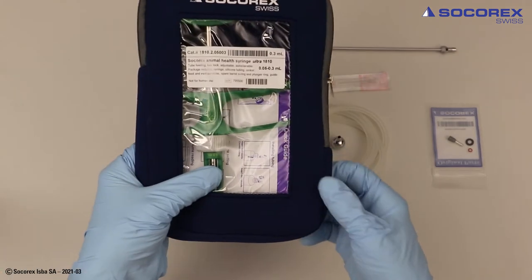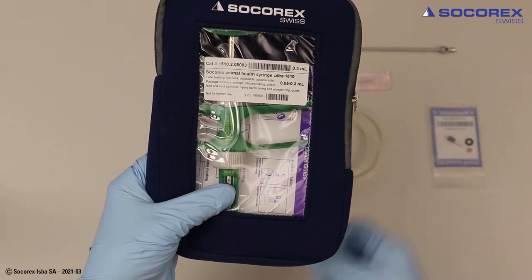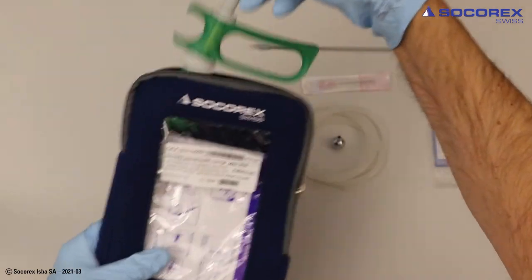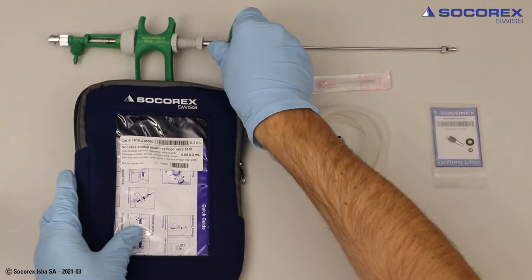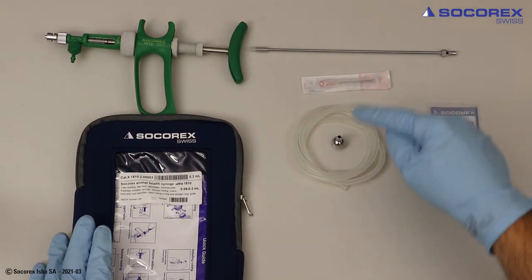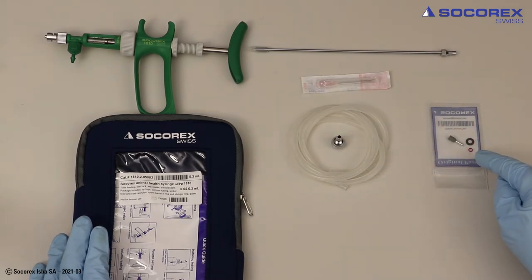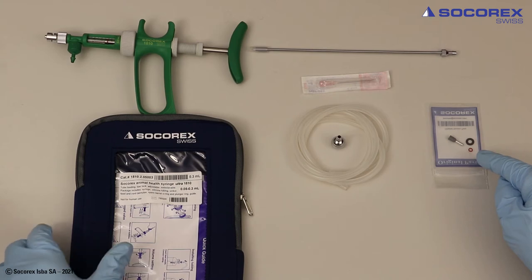The 1810 Ultra series is supplied in a smart reusable pocket. It contains the syringe itself, feed needle, vent canula, sinker, silicone tube, a small bag with o-ring, o-ring guide and washer.